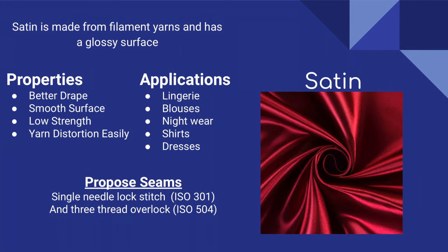Last but not least, let's talk about satin. Satin refers to a weave of fabric rather than the material itself. It typically has a glossy surface and a dull back. The pros are that it's a very versatile fabric and feels really soft and silky to the skin, which is why it's a popular choice for bed sheets and lingerie. Satin made from pure silk is 100% natural. The cons are that it's difficult to sew as it's glossy and can slip around in a sewing machine, requires special treatment, and can't simply be thrown in the washing machine. It's not shiny on both sides, which limits design options. The actual strength is low and yarn distortion is easy. The proposed seam for satin is a single-needle lock stitch and three-thread overlock.